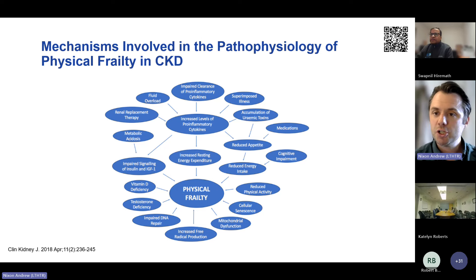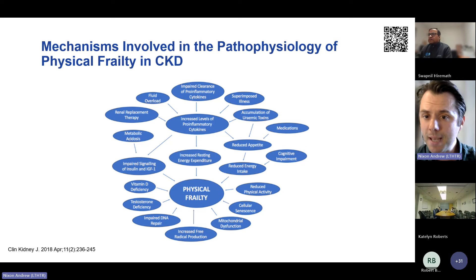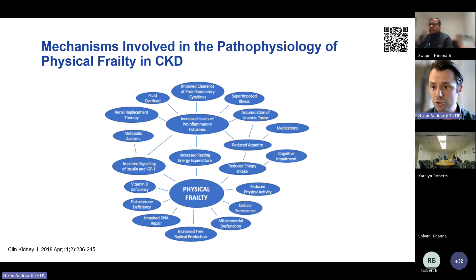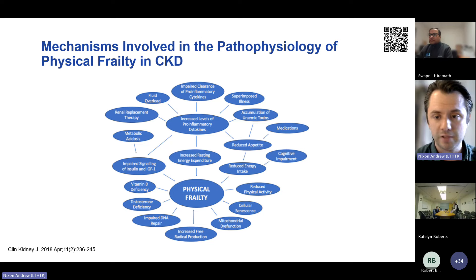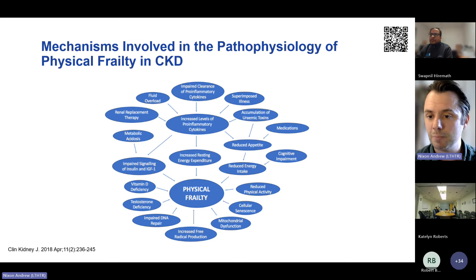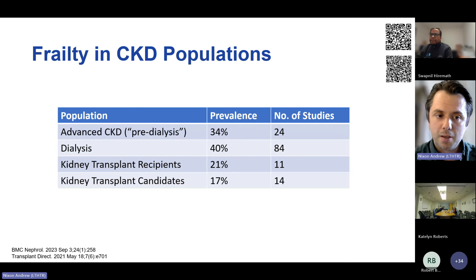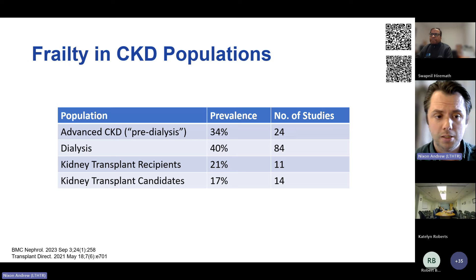Frailty is this age-associated decline in physiological reserve. But what we find in chronic kidney disease is that many of the associated pathophysiological processes contribute to sarcopenia, premature ageing and the frailty syndrome. This figure is a simplified schematic of some of the pathophysiological processes involved, including increased inflammatory burden, dysregulation of anabolic hormones and premature cellular senescence.